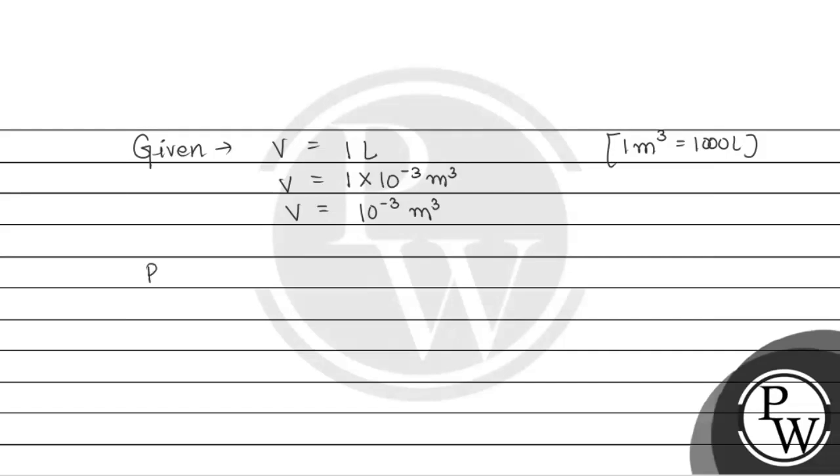Then we have pressure, which is 7.57 × 10^7 Newton per meter square. And the number of molecules given is 2.0 × 10^21.